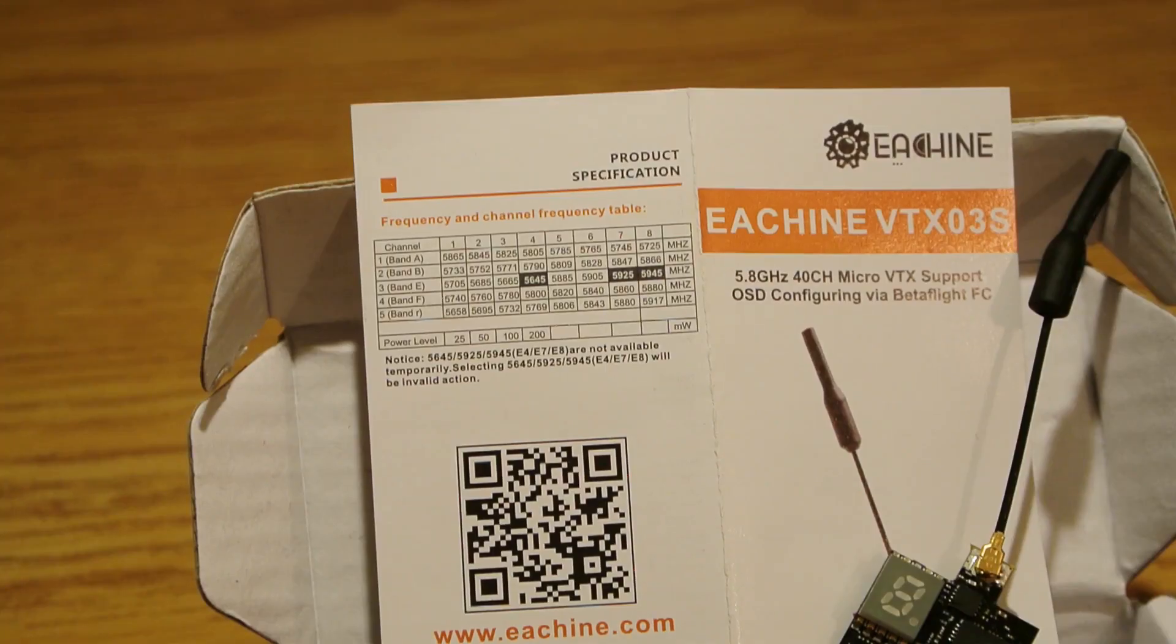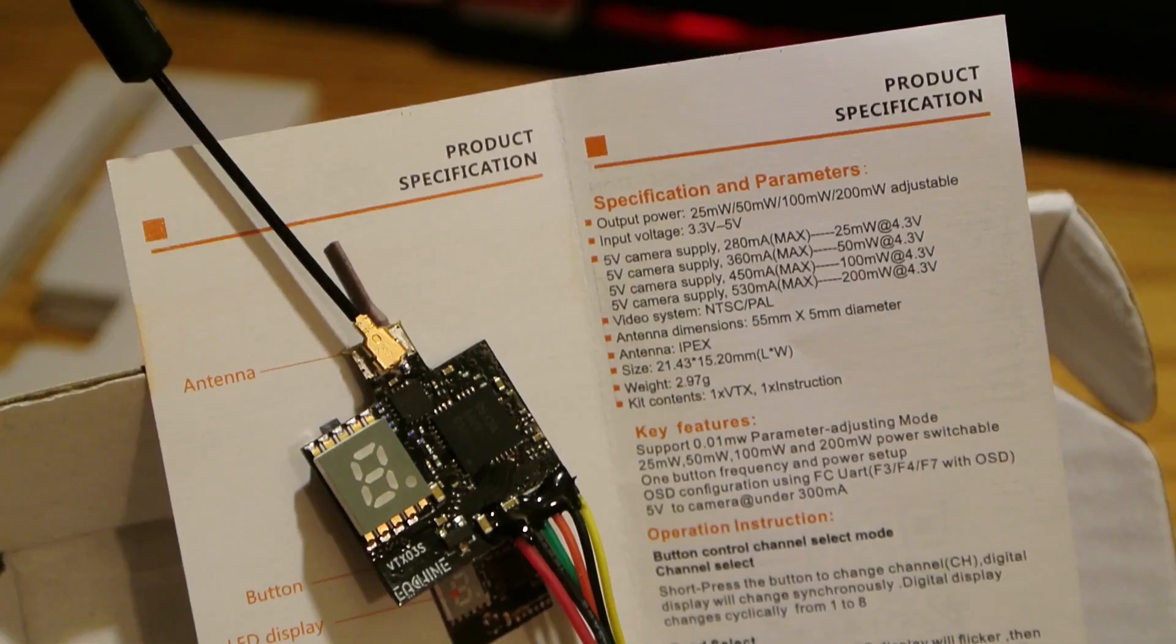The video transmitter itself supports all frequencies except E4, E7, and E8, and it can broadcast at powers of 25, 50, 100, and 200 milliwatts.